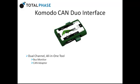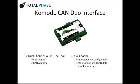The Komodo has two USB interfaces and two CAN channels. This unique structure connects each CAN channel to both USB interfaces, allowing developers to send data to both CAN channels from a single USB interface, while monitoring both CAN channels from the second USB interface.